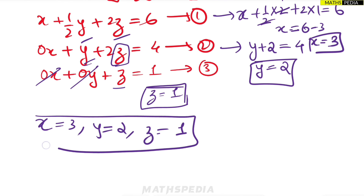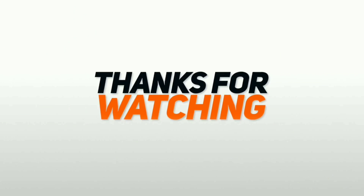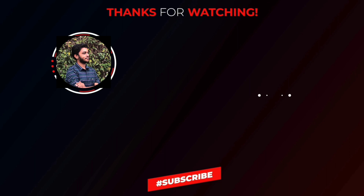We have solved the same problem using Crout's method that was also solved using Cholesky's method. The main question to consider is: what is the similarity you can find in the answers? Try to find out that reason.